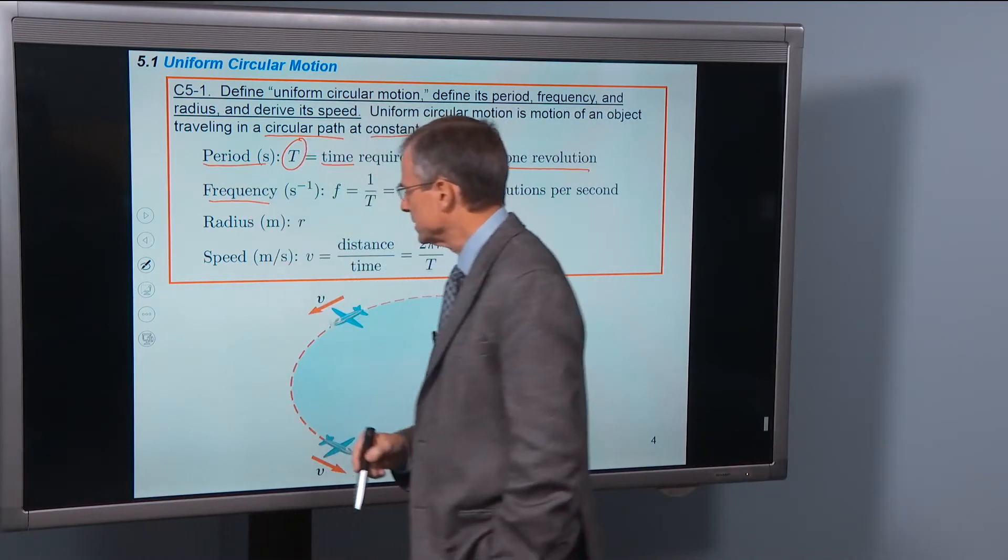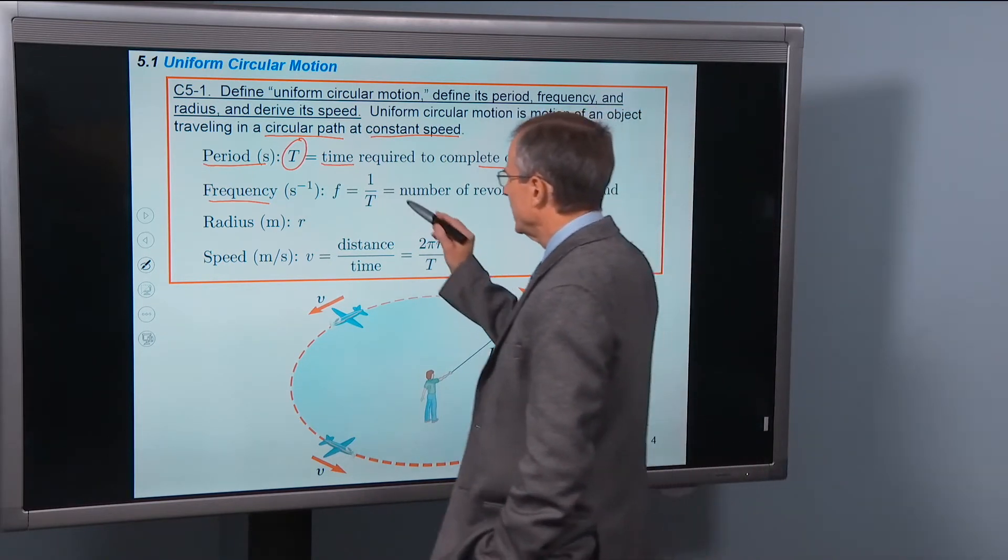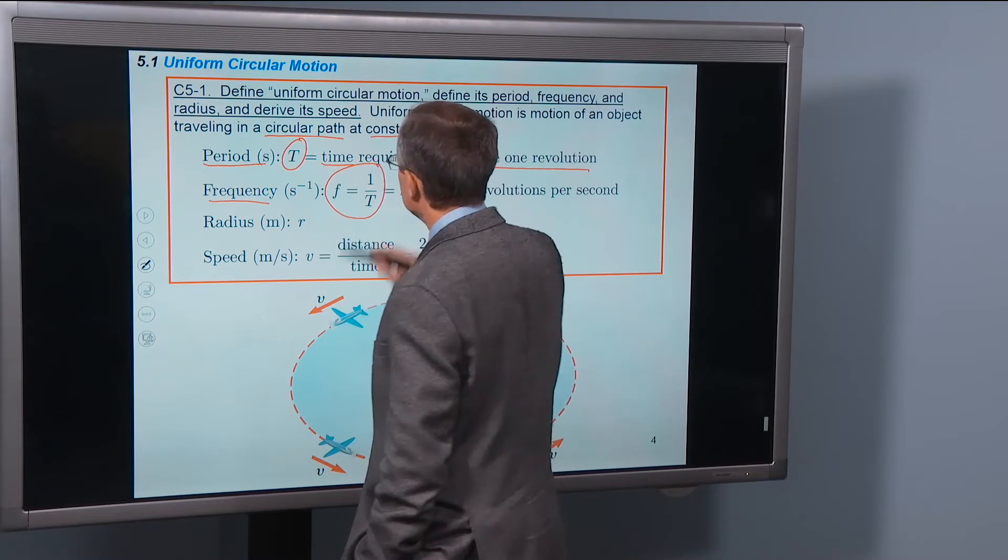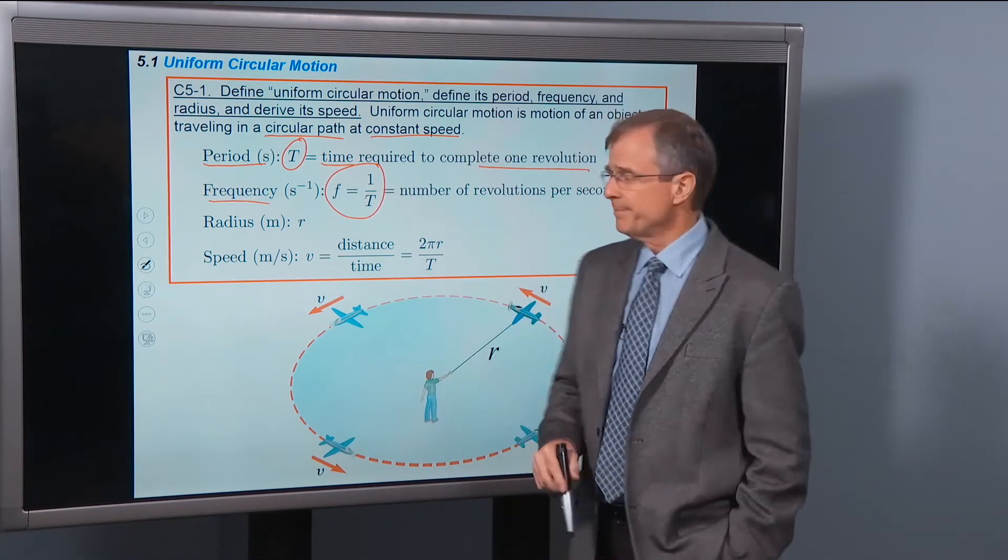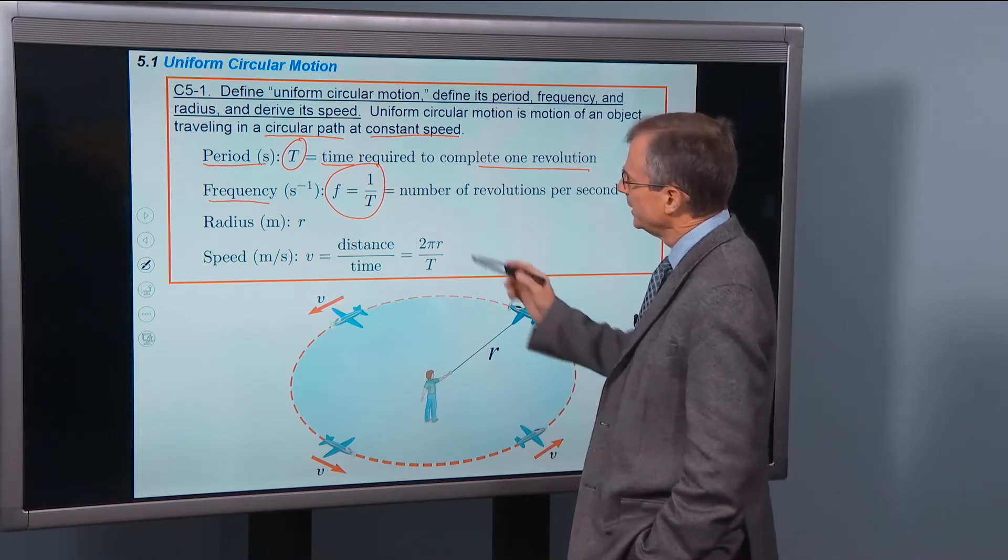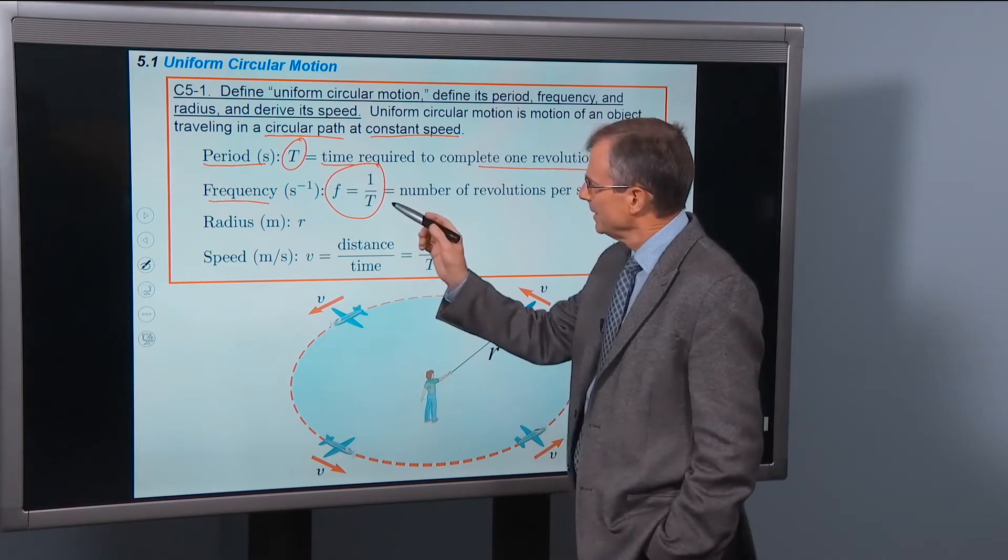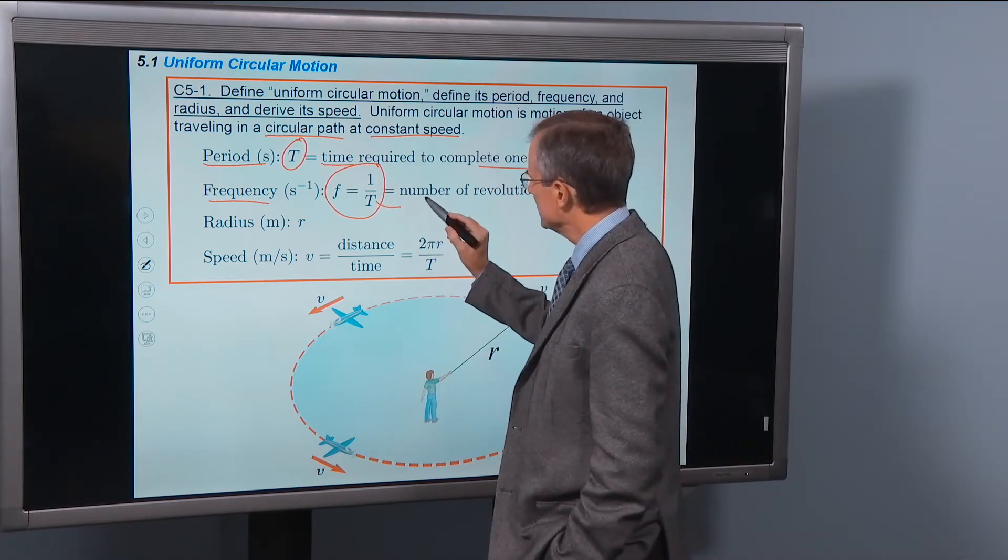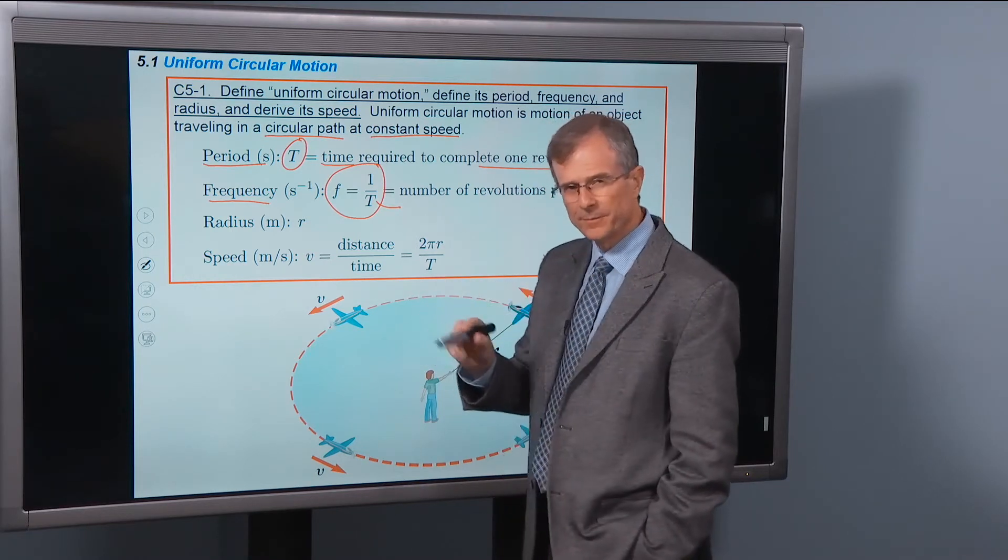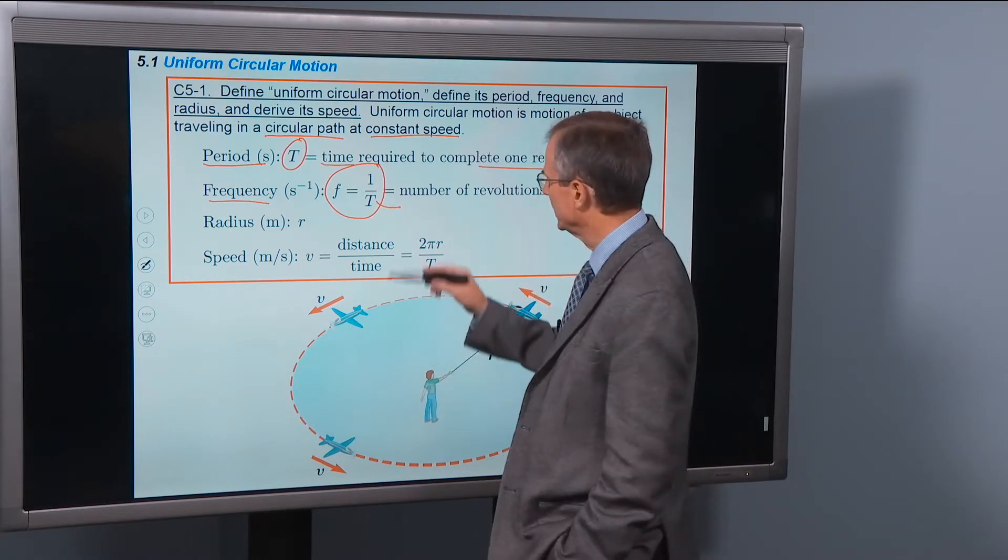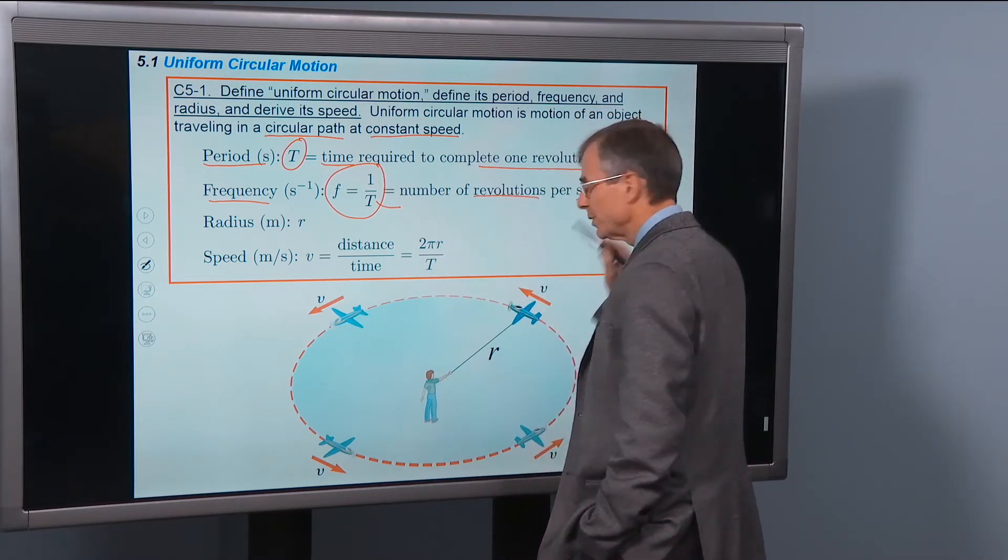What's the frequency? The frequency of uniform circular motion is defined as 1 over the period. So whatever the period is, the frequency is 1 over that. If the period is the time required to complete one revolution, then this is a time in seconds per revolution. But you take 1 over that, and you get the number of revolutions per time.